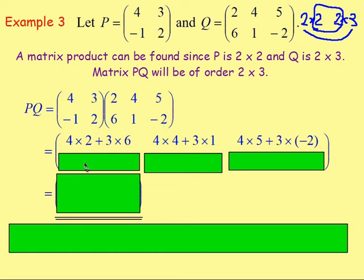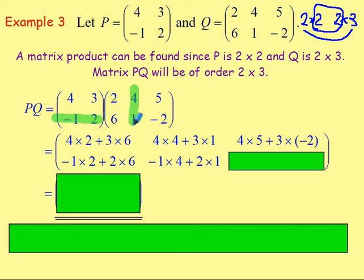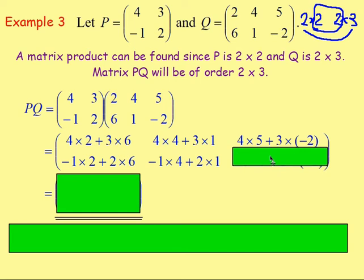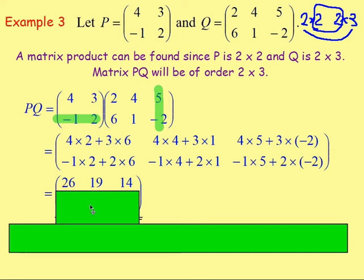Moving down a row: for the entry in the second row and first column, multiply the second row by the first column: (-1) times 2, add 2 times 6. For the second row and second column: (-1) times 4, add 2 times 1. For the second row and third column: (-1) times 5, add 2 times (-2). Working that out gives the top row 26, 19, and 14, and the bottom row 10, -2, and -9.